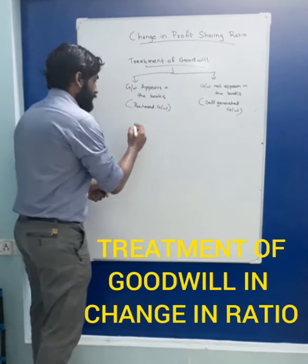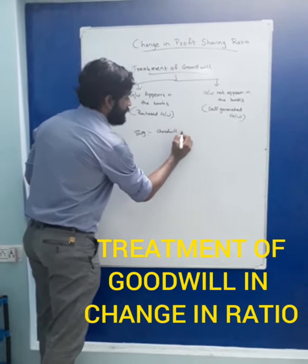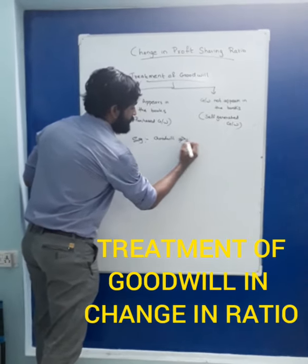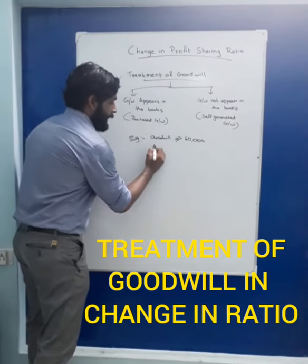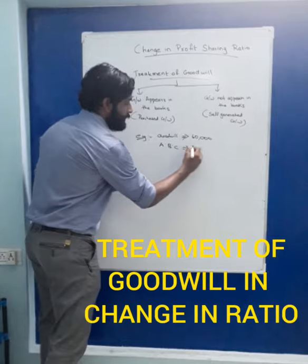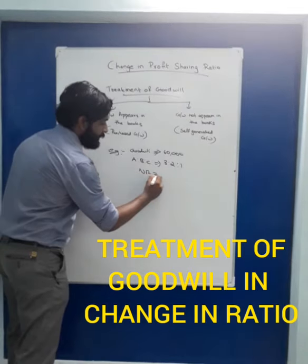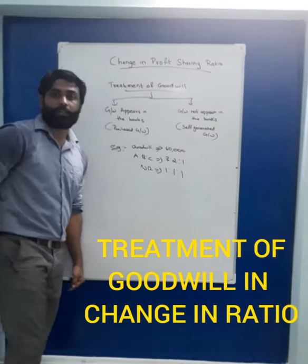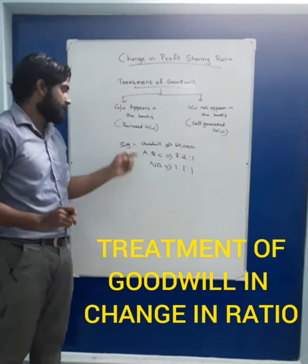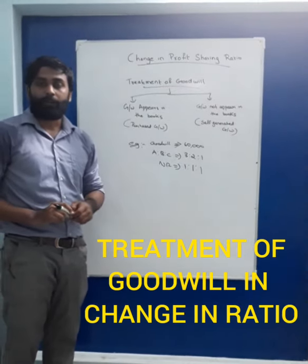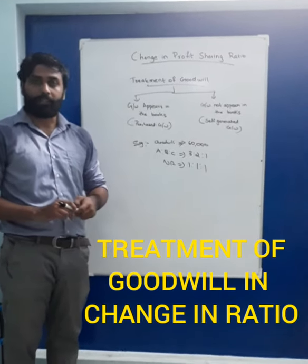I will give you an example. The value of Goodwill is 60,000. A, B, and C are partners with a profit-sharing ratio of 3:2:1. They change the ratio — the new ratio is 1:1:1. What is the treatment of purchased goodwill worth 60,000 when there is a change in profit-sharing ratio between these partners?